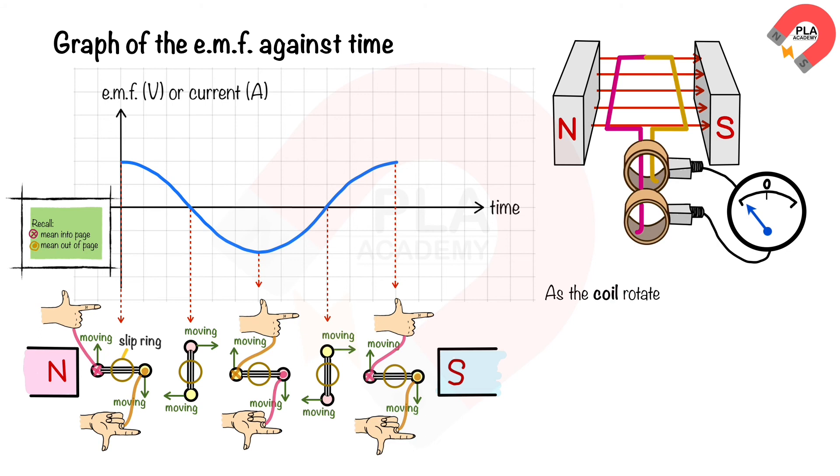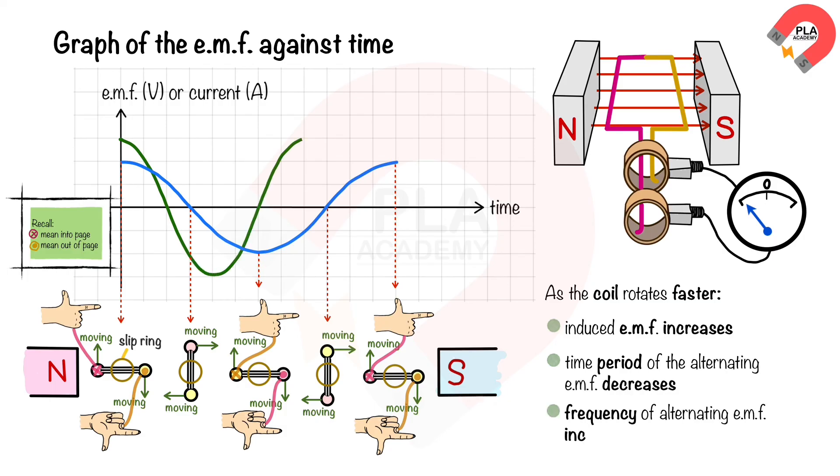As the coil rotates faster, the induced EMF increases and the time period of the alternating EMF decreases. This leads to an increase in the frequency.